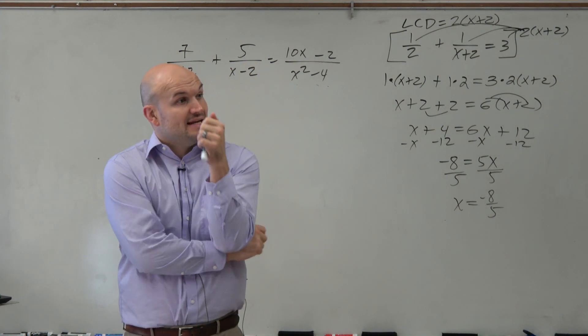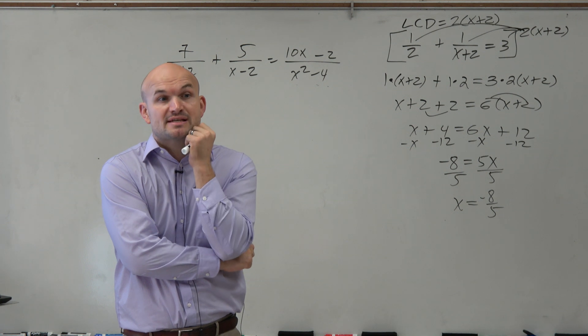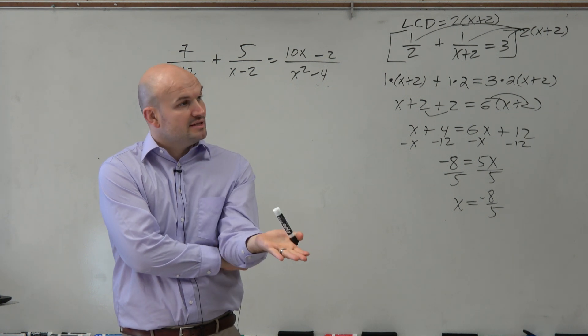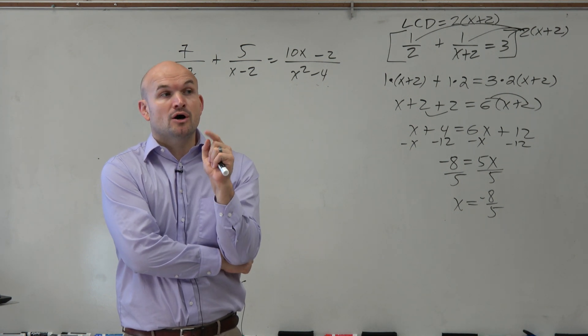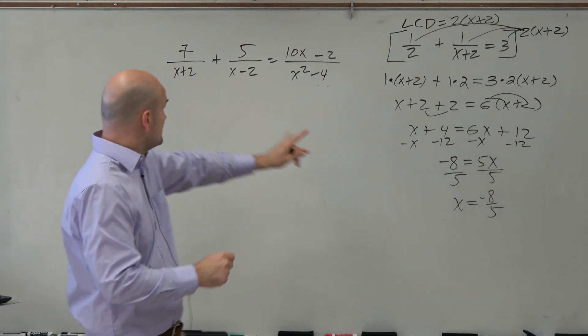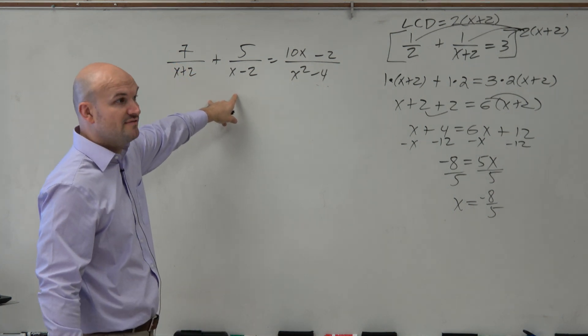Now, again, we know there's two problems, right? We know our answer cannot be 2 or negative 2 because those would be excluded values. Sometimes they're listed in the problem, sometimes they're not. But we know whenever we solve this, we cannot have 2 and negative 2 because those make the denominator 0. Those are excluded values.